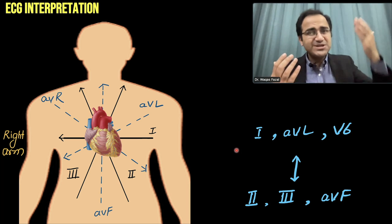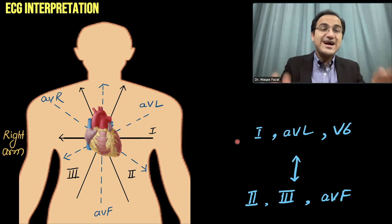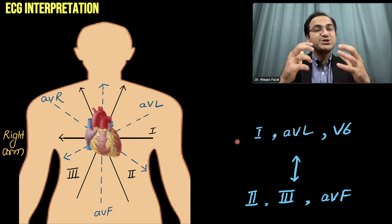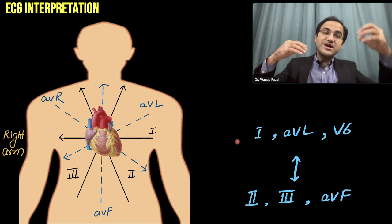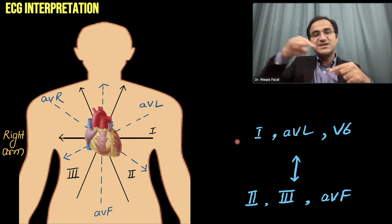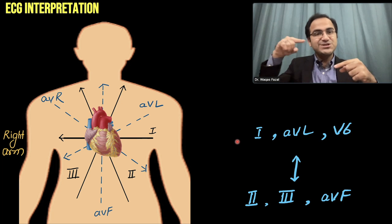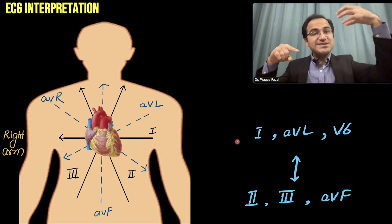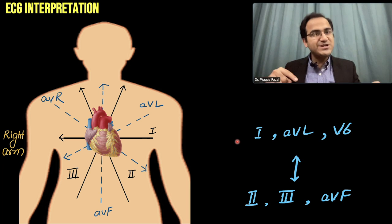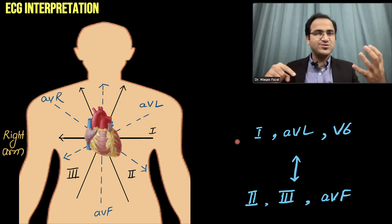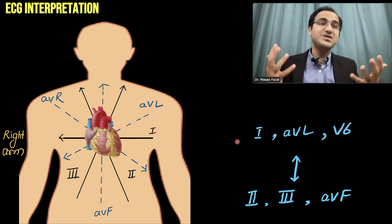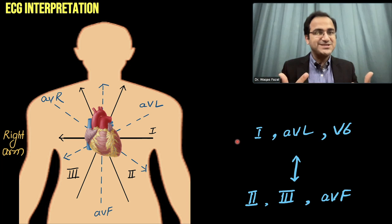Why does there appear ST segment depression in those leads? Basically, the electrical activity of the heart is altered in myocardial infarction. If the current is flowing in the direction of certain leads, those leads show positive deflection and ST segment elevation. The leads lying opposite to them show ST segment depression because the current is flowing away from them. This alteration in current flow appears as a reciprocal change.